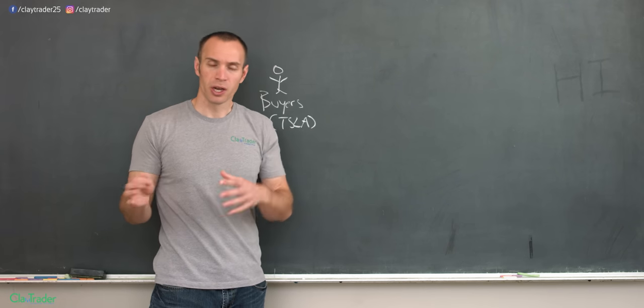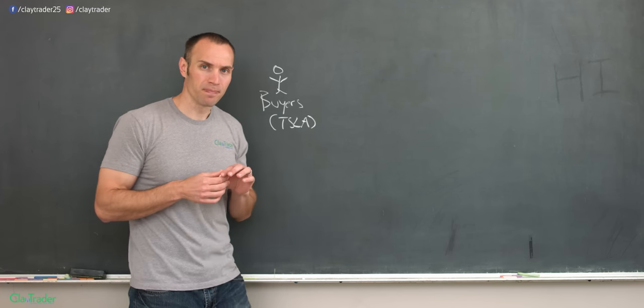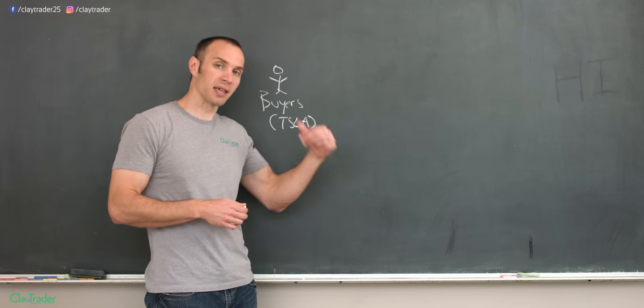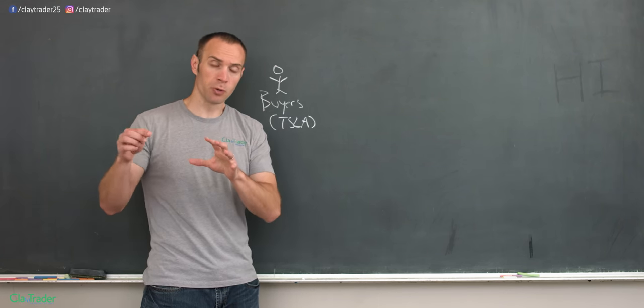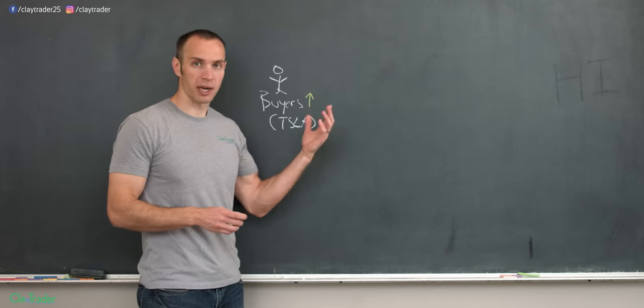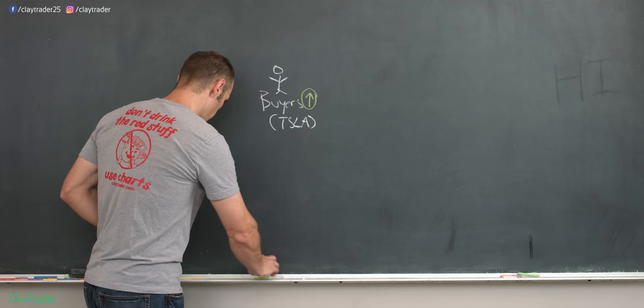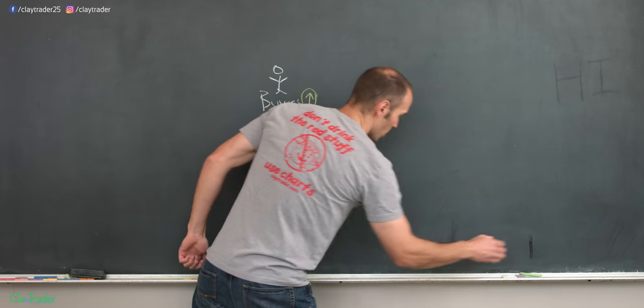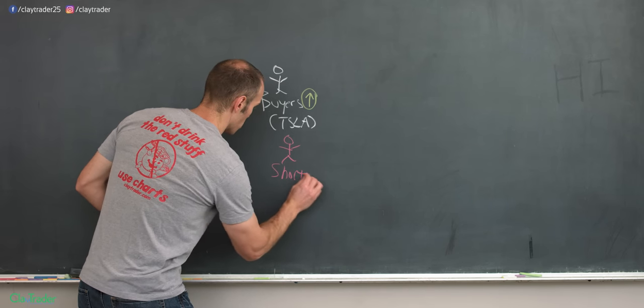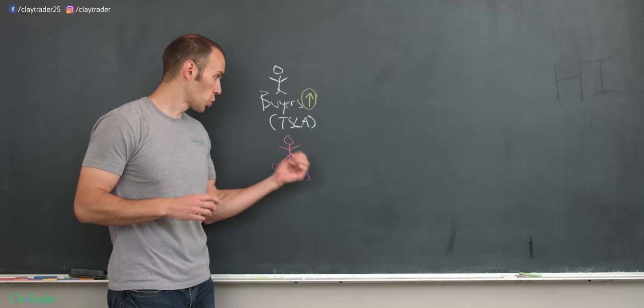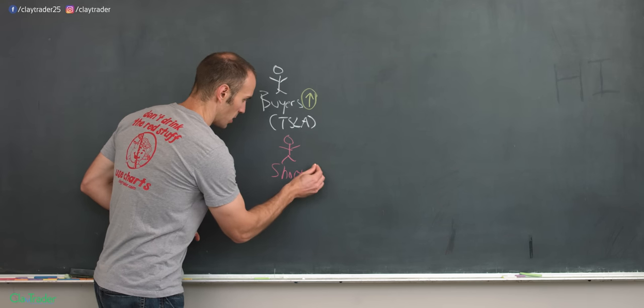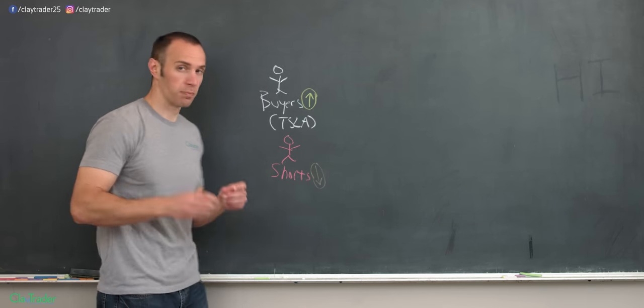And then there's another group of people out there. Let me take a step back. Why would people buy? Well, people buy because they think a stock is going to go up. People buy because they think Tesla is going to go up. But there's another group of people out there. We'll put buyers buy because they think that the price is going to go up, represented there by the green arrow. You have another group of people out there that are known as the shorts.